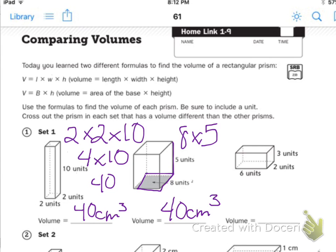You do the last one. You have length, width, and height. Decide if you're going to use the first formula or the second formula. And then remember to cross out the prism in each set that has a volume that is different. So here we have 40, here we have 40, here we have 40. They are the same.